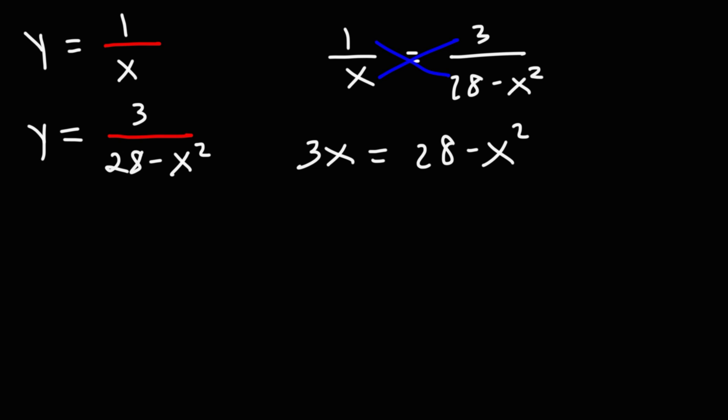Now what I'm going to do is take everything from the right side and move it to the left side. So negative x squared, once I move it from the right to the left, it's going to become positive x squared. And positive 28, when I transfer it, becomes negative 28 on the left. And since there's nothing on the right, we have 0. So right now what we have is a quadratic equation.